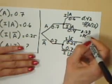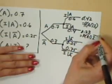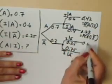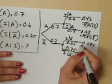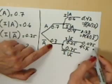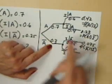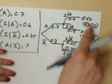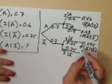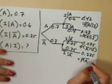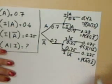0.7 times 0.4 is 0.28, and that's the probability of advertised and no increase in sales. Then 0.3 times 0.25 is 0.075, and that's the probability of no advertising and increase in sales. This last one — you can take 0.3 times 0.75, which is 0.225 — and that's the probability of no advertising and no increase in sales.